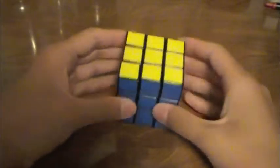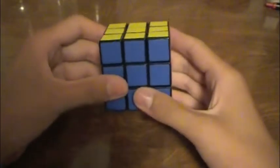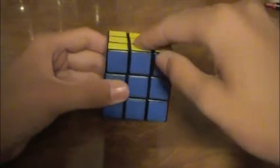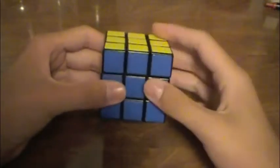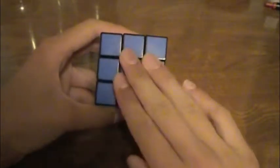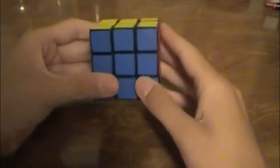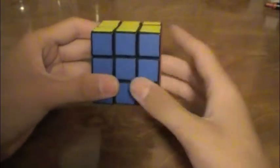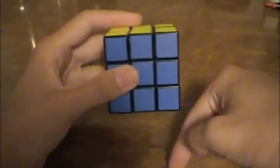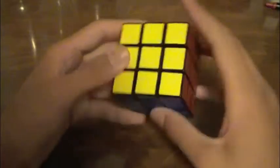The faces that we look at are in reference to U. Whichever way is facing up, in reference to U, is the U layer. Whichever way is facing you is the front, or the F layer. And therefore, this is right, or R, left, or L, D for down, and B for back.